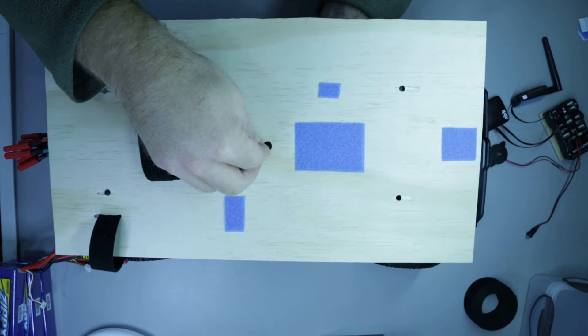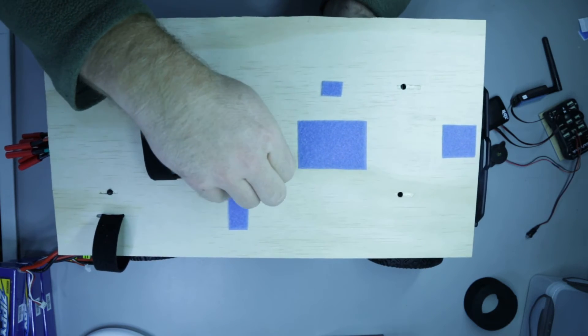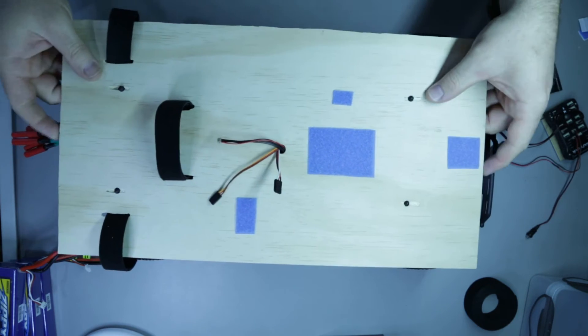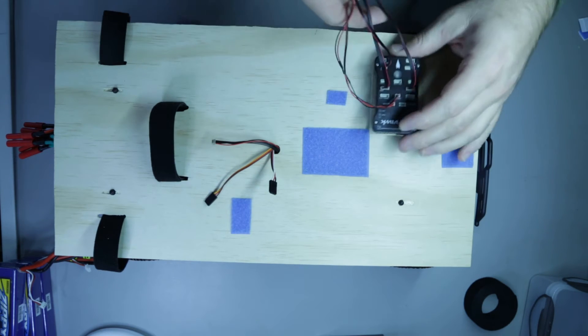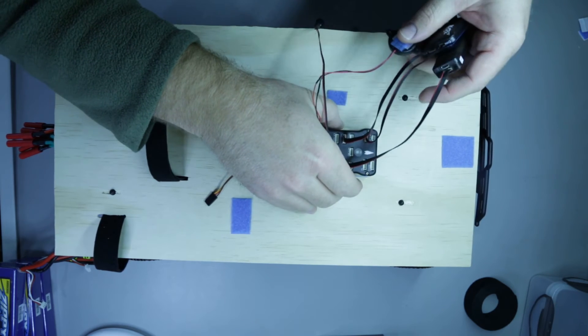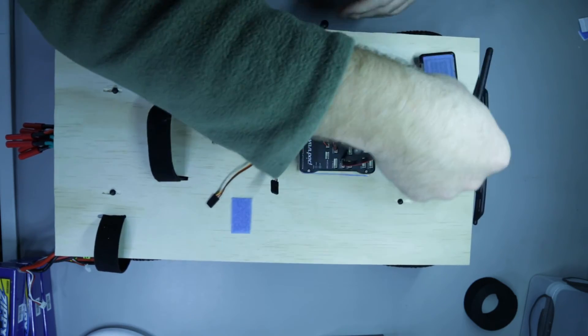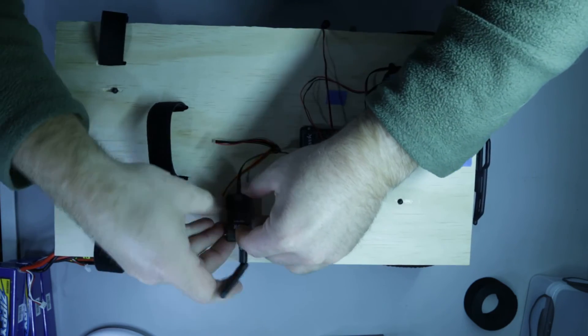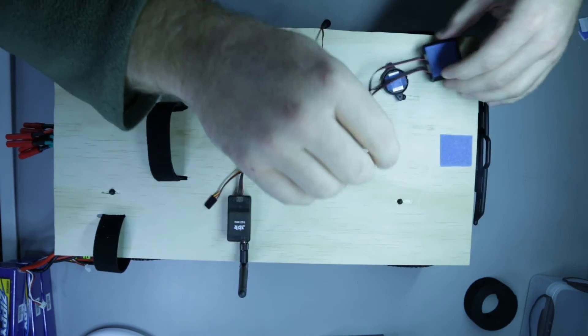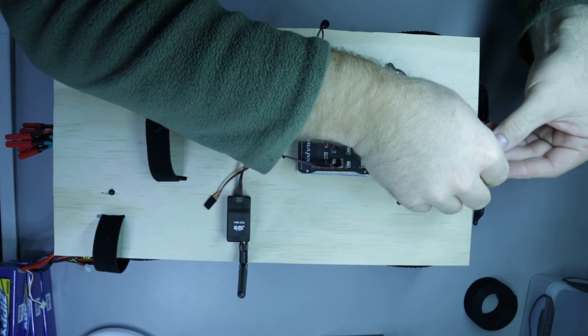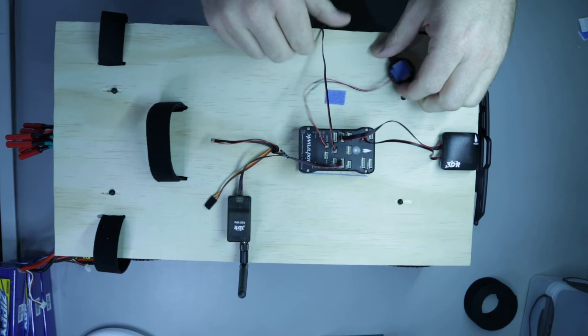So if I just quickly put the Pixhawk back on, got all our pieces here. Secure that in place there. Secure the radio there. Secure the GPS there.